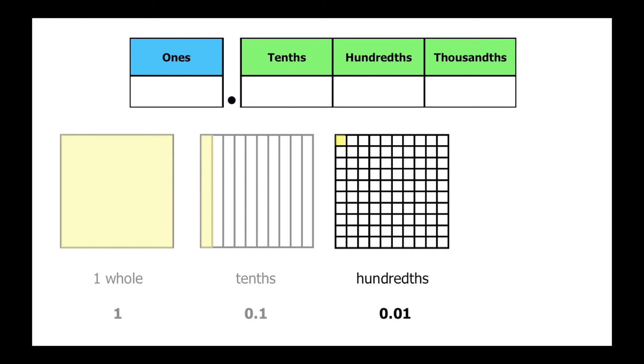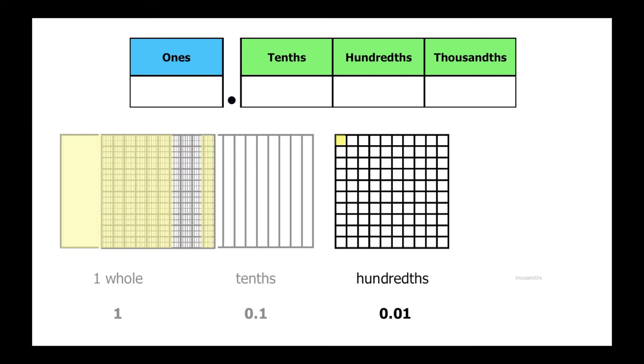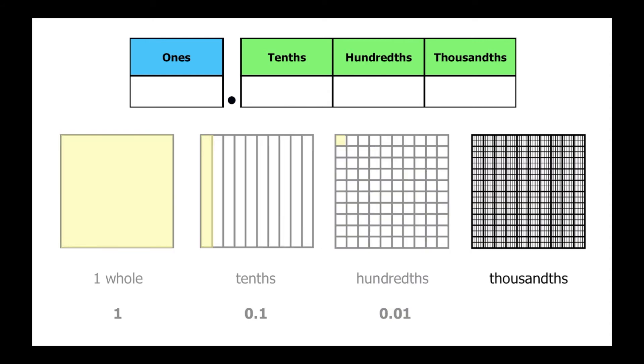Let's divide our square one more time. This time, we'll divide it into 1,000 equally sized parts. Now our parts are really tiny. Each part represents one thousandth, or one out of a thousand. We'll shade one part yellow, but it is so tiny it is hard to see.